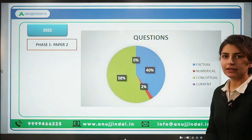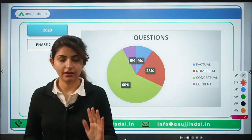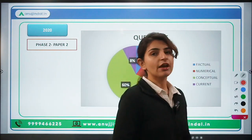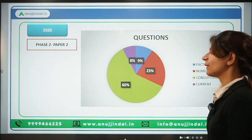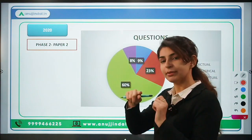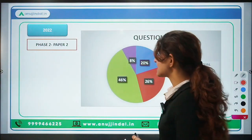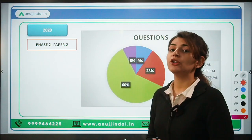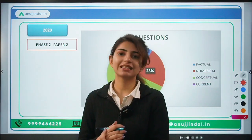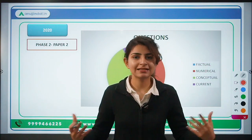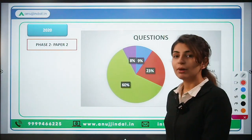Moving to 2020 — the exam was conducted in 2021 because of COVID. In Phase 2 of 2020, there were again numerical questions, factual questions, and conceptual questions, along with some current affairs questions. The numerical questions were a little easy that year compared to 2022, where one-fourth of the paper was numerical and they were very lengthy. In 2020 they were still doable, but in 2022 numericals were very detail-oriented and lengthy. So practice lengthy numerical questions — do not skip them, and do not keep asking whether the exam can be cleared without numericals. It was a very balanced paper in 2020.